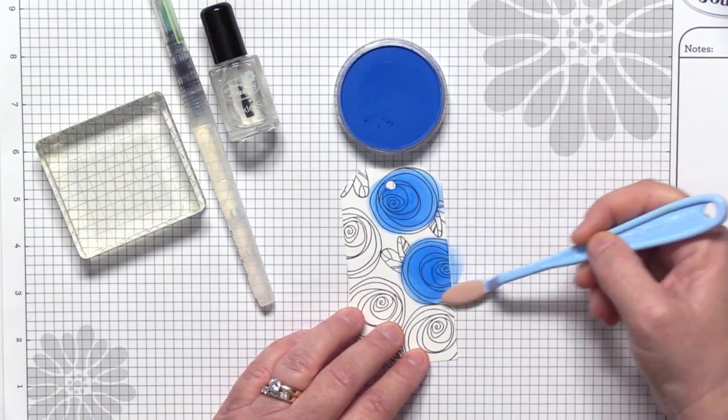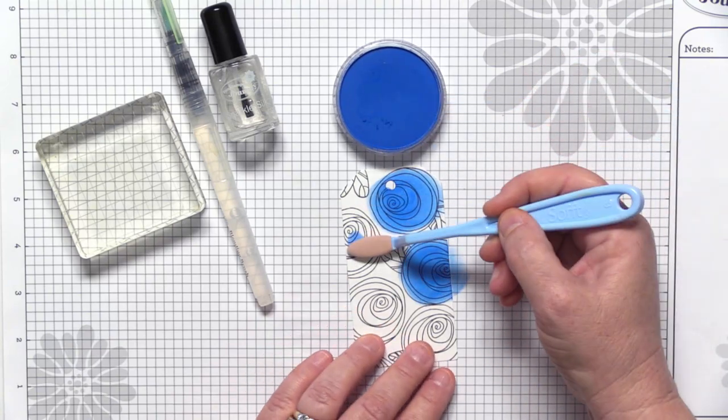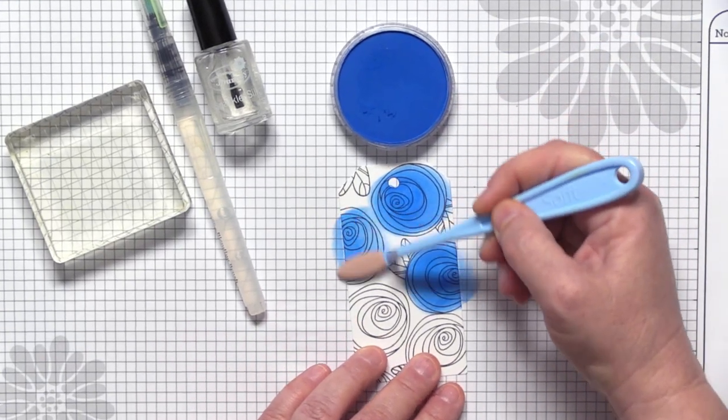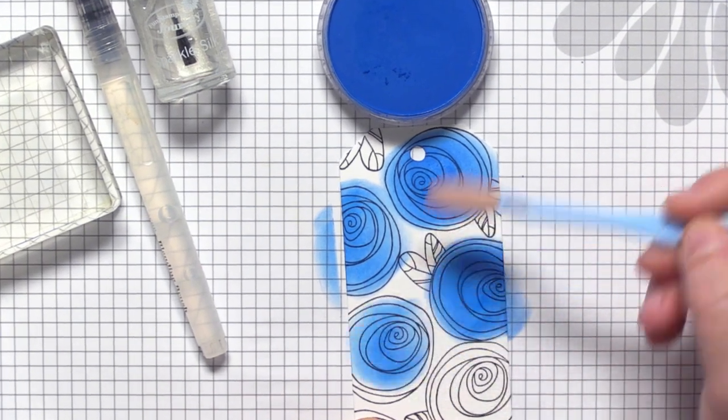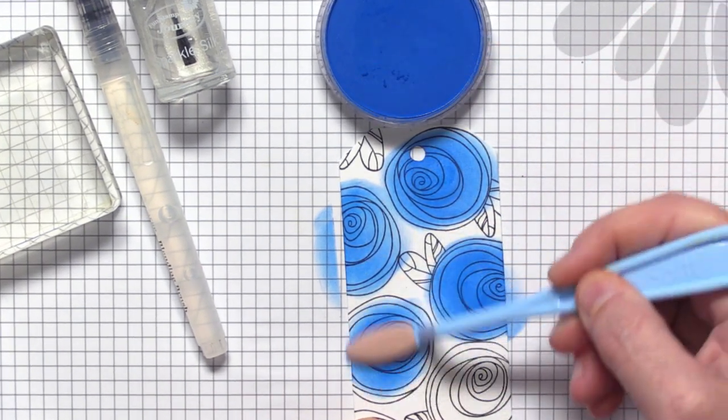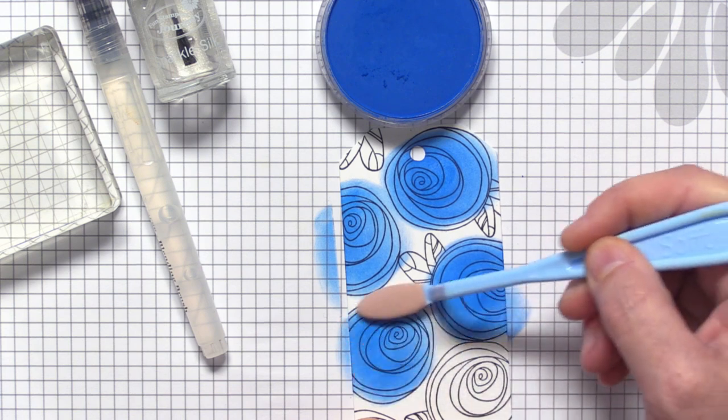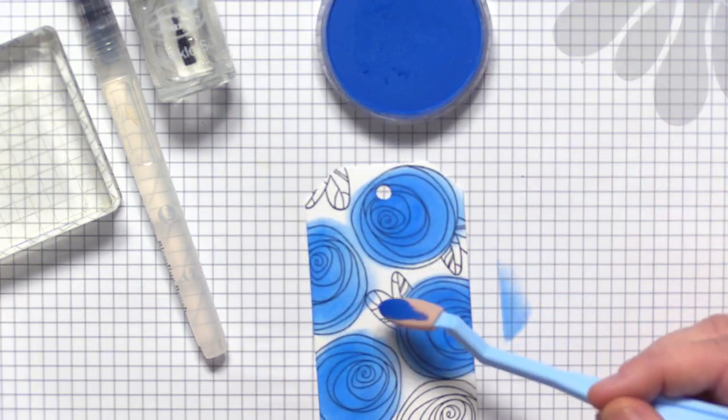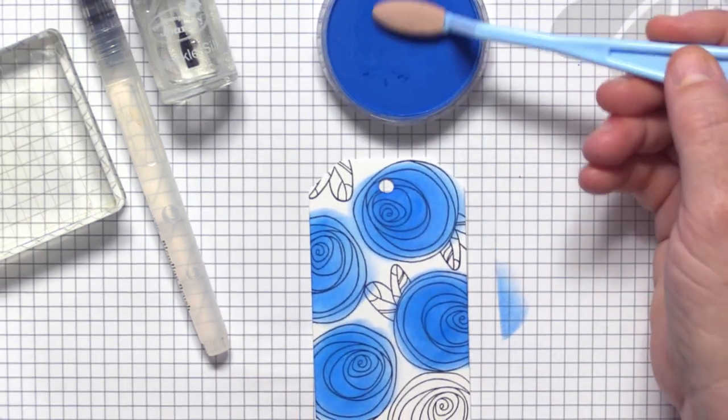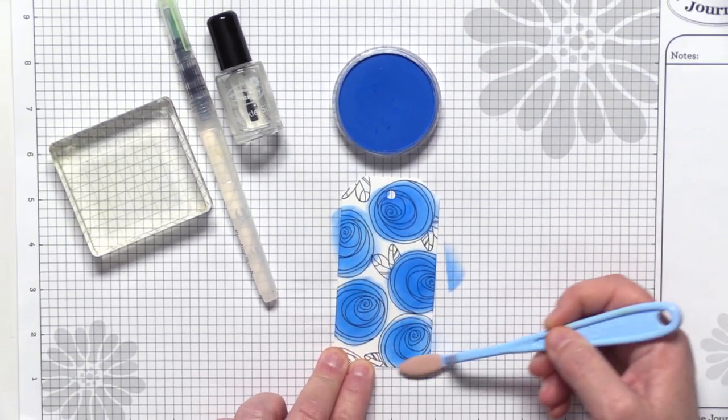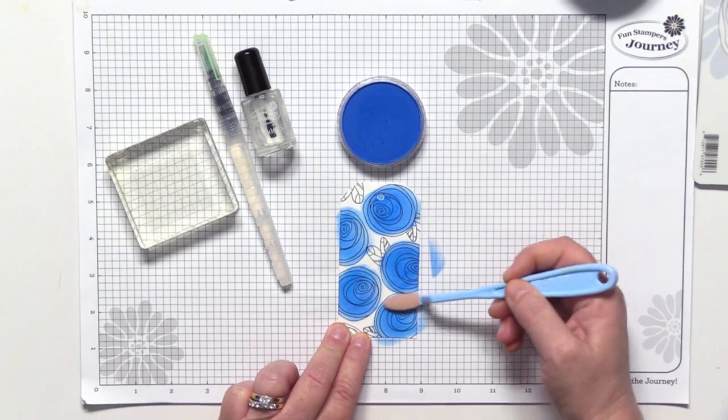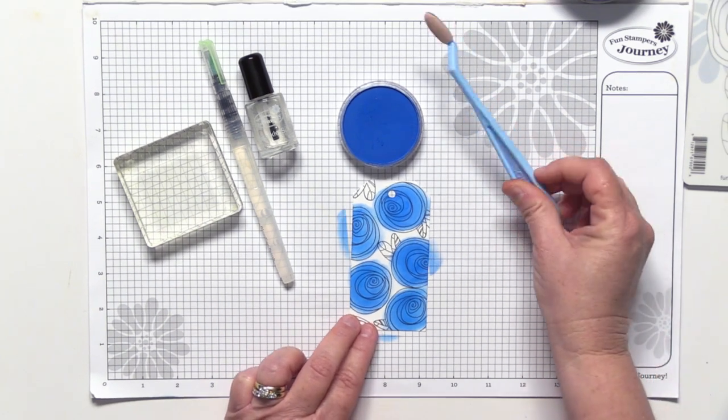You really can't get that look with any other product. I'm actually not even going to color my leaves in because I want to keep this tag pretty monochromatic. You could come in with a fine tip and bring in perhaps some green lemongrass or kiwi slice, but I don't really need to.